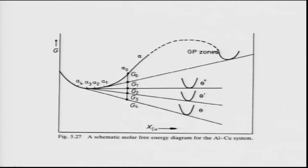This can be explained using free energy-composition diagrams, which describe the equilibrium compositions between the transient phases — GP zones, theta double prime, and theta prime — with the alpha phase.